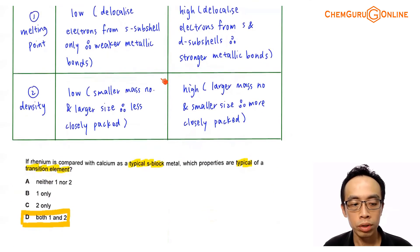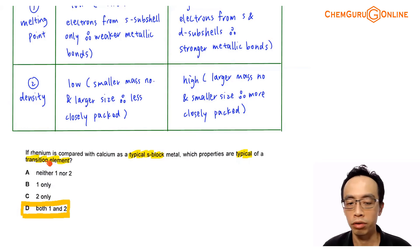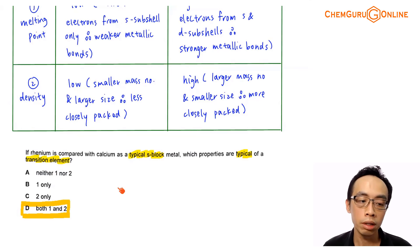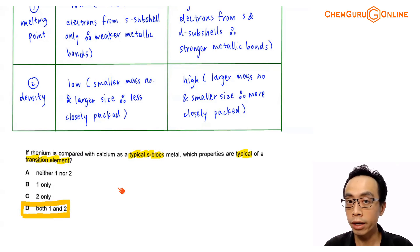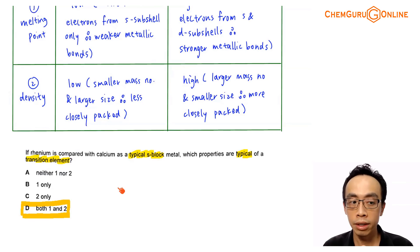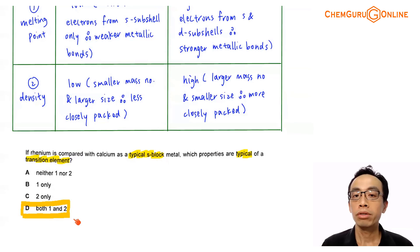Coming back to the options, if rhenium is compared with calcium as a typical S-block metal, which properties are typical of a transition element? We expect a transition metal to have a higher melting point than an S-block metal, and a higher density than an S-block metal. Both statements 1 and 2 are valid, so the answer to this question is option D.